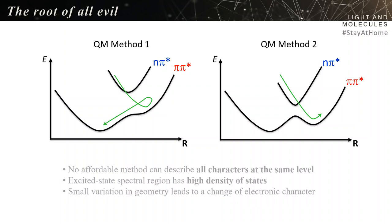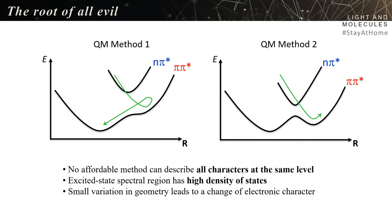No affordable method can describe all characters at the same level. The excited-state spectral region has a very high density of states — a small variation in geometry leads to a change of electronic character. If a method made the wrong error systematically, it wouldn't be so worrying. But methods like TDDFT with a B3LYP functional do a good job for localized states but a poor job for charge-transfer states. This shift of error between different diabatic characters causes the wrong topography of the adiabatic surfaces.